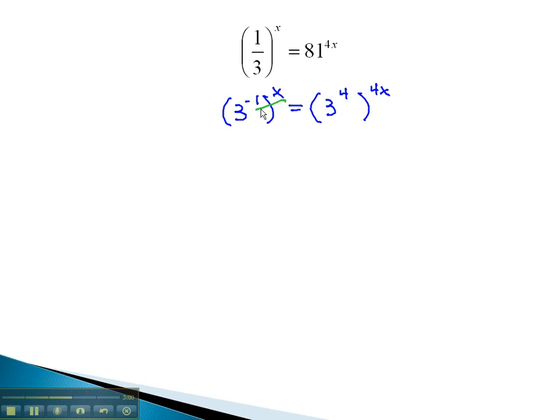Now, we can use our exponent properties to combine those exponents together to give us 3 to the negative x equals 3 to the 16x by multiplying the exponents together. Now, we see that we've got the same base on both sides.